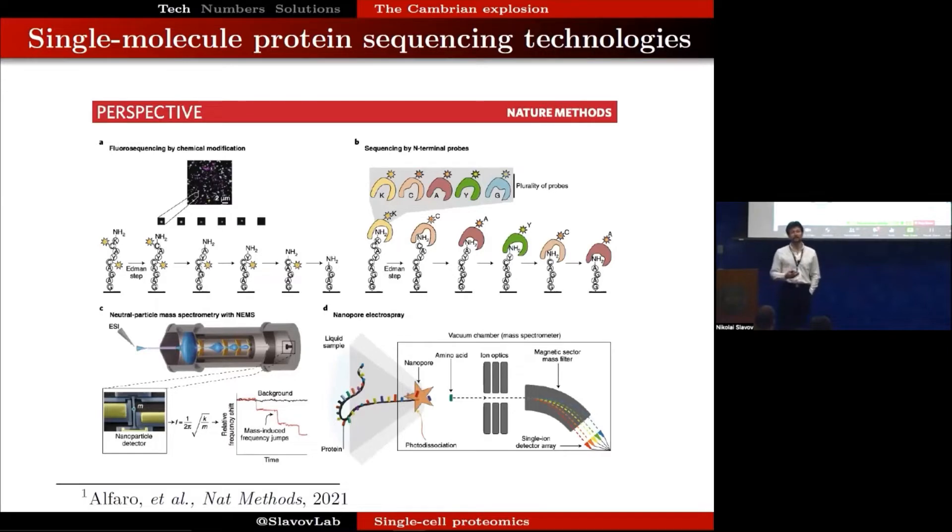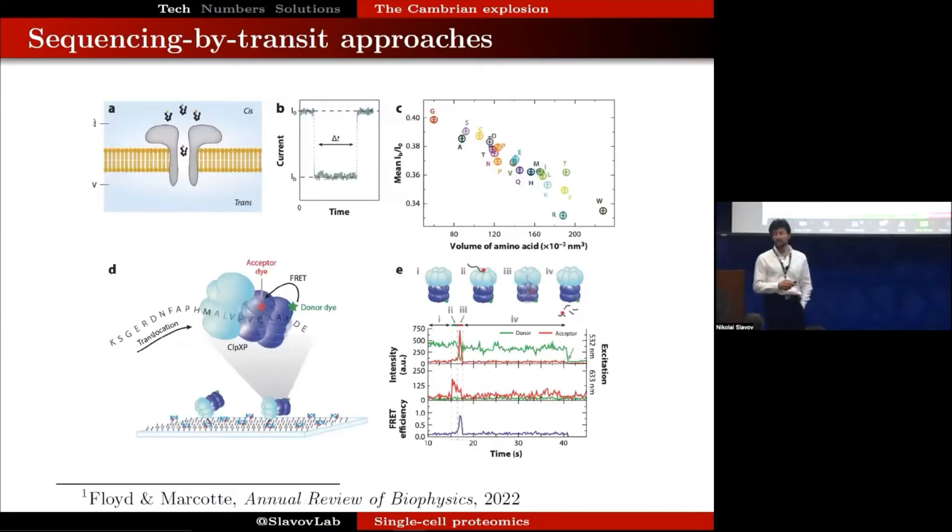It's a very exciting time for single molecule methods, with a variety of different methods being introduced. One approach is single molecule Edman degradation. Other approaches use various affinity reagents to recognize peptides and proteins at the single molecule level. There's also a whole array of methods such as nanopore sequencing and sequencing by transit methods. These methods will have different strengths and weaknesses and can complement existing more mature approaches based on mass spectrometry.